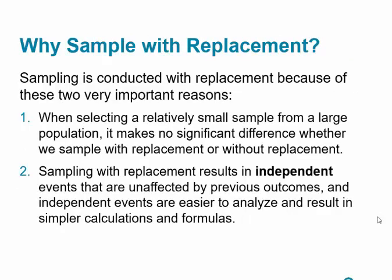Why sample with replacement? There are two important reasons. First, when selecting a relatively small sample from a large population, it makes no significant difference whether we sample with or without replacement. Second, sampling with replacement results in independent events unaffected by previous outcomes, and independent events are easier to analyze with simpler calculations and formulas. For example, with a deck of 52 cards, putting the card back and reshuffling means the probability of choosing the next card doesn't change — we're still choosing from 52 cards. That's the end of section 6.3.